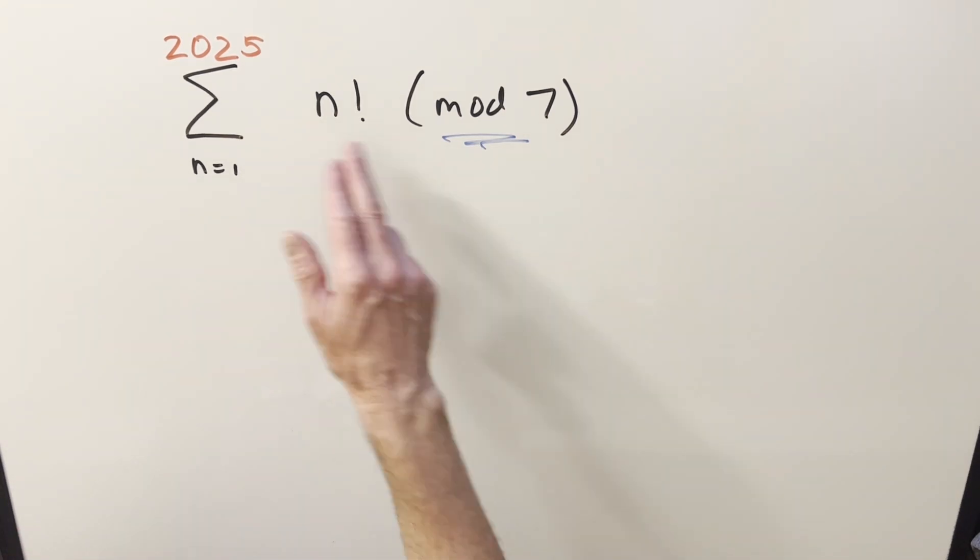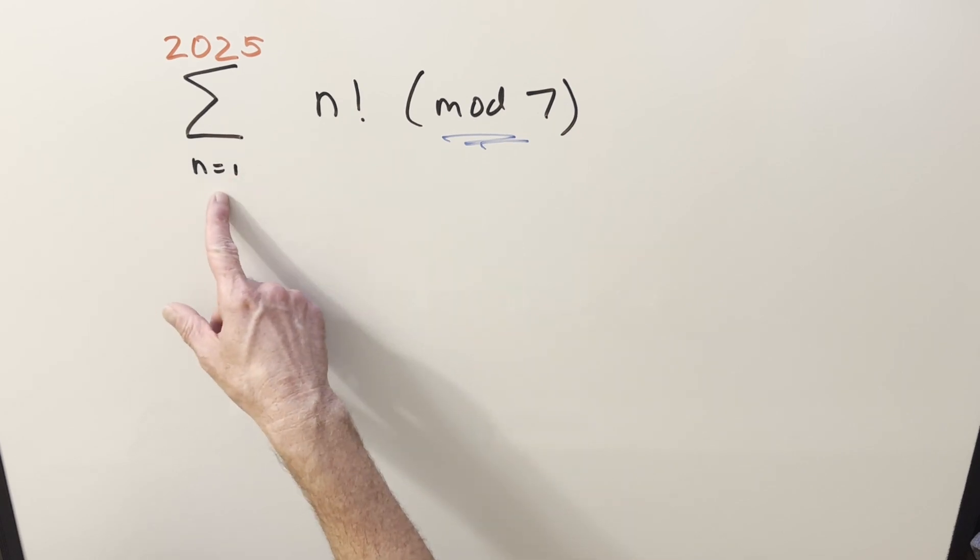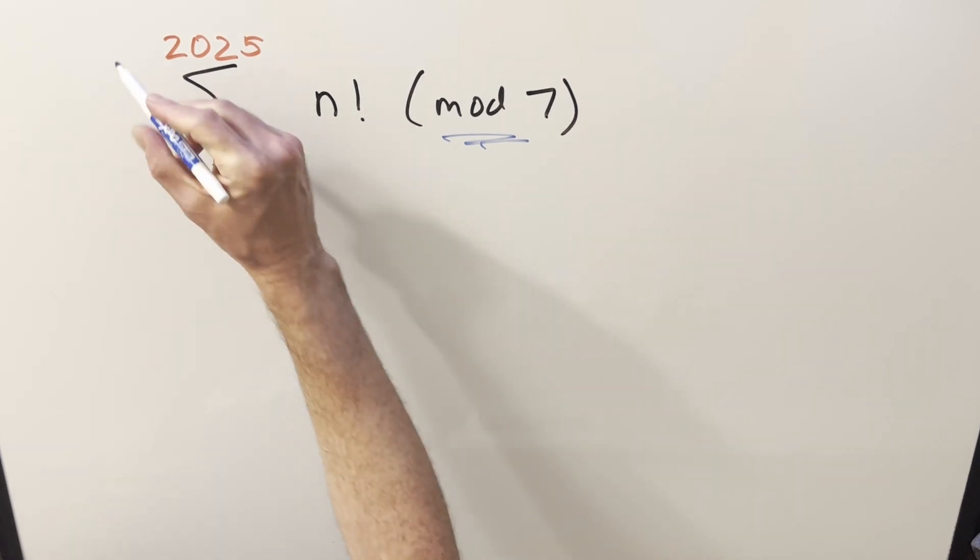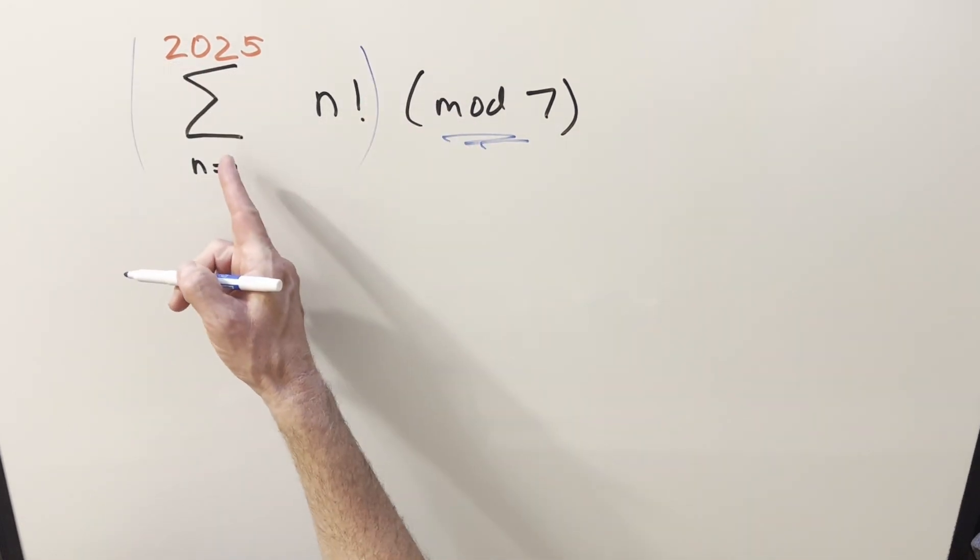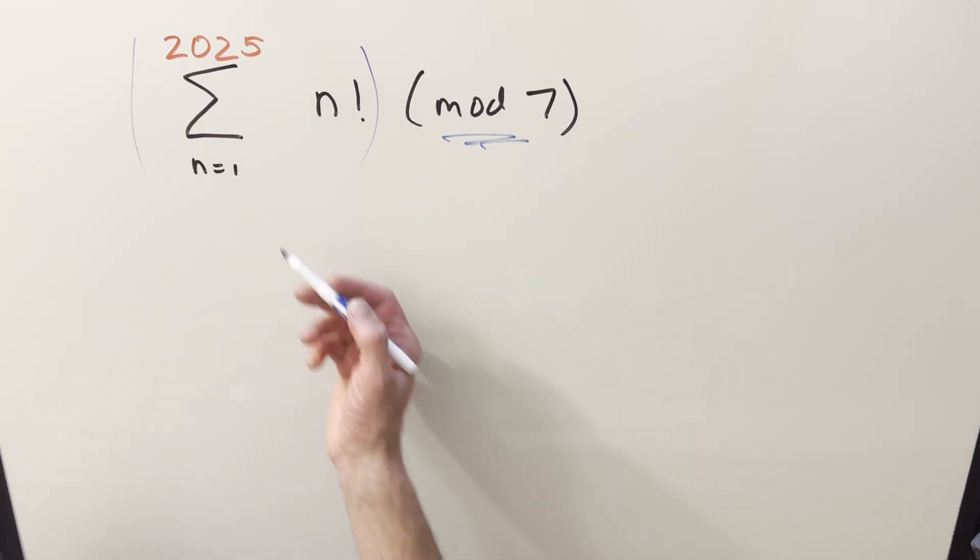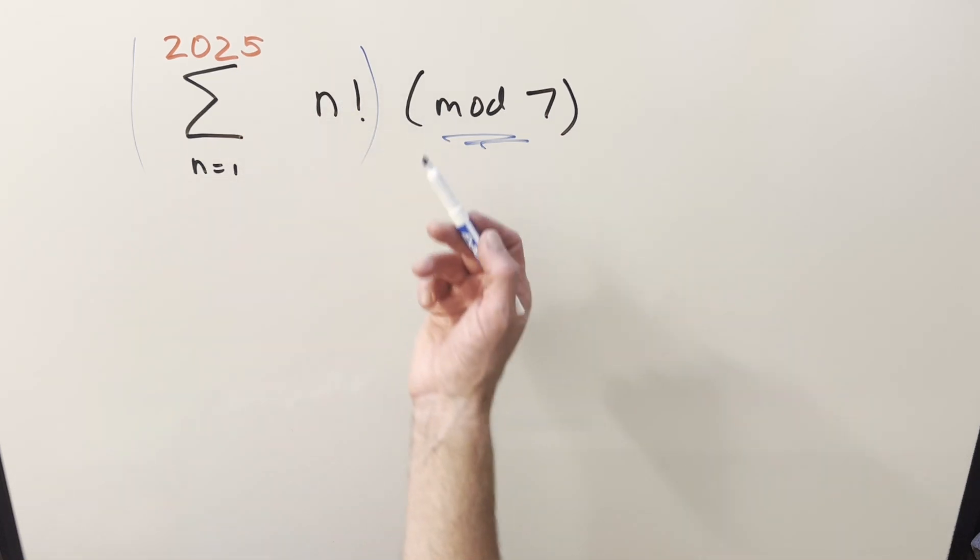So we really probably want to reduce it for every term because if you were to first take this sum right here, 2025 is going to be such a huge number you're not going to want to try to calculate that out first. And that does bring up something interesting with factorials.